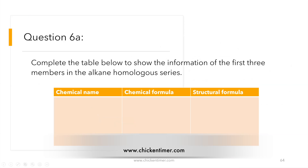So your turn to draw. You have to draw the first three members of the alkane homologous series — one carbon. Then you name the chemical formula, then you draw the structural formula. The chemical name for one carbon is methane. For this one, you're supposed to write the one carbon only. What is the chemical formula for methane? Then you draw the structural formula.